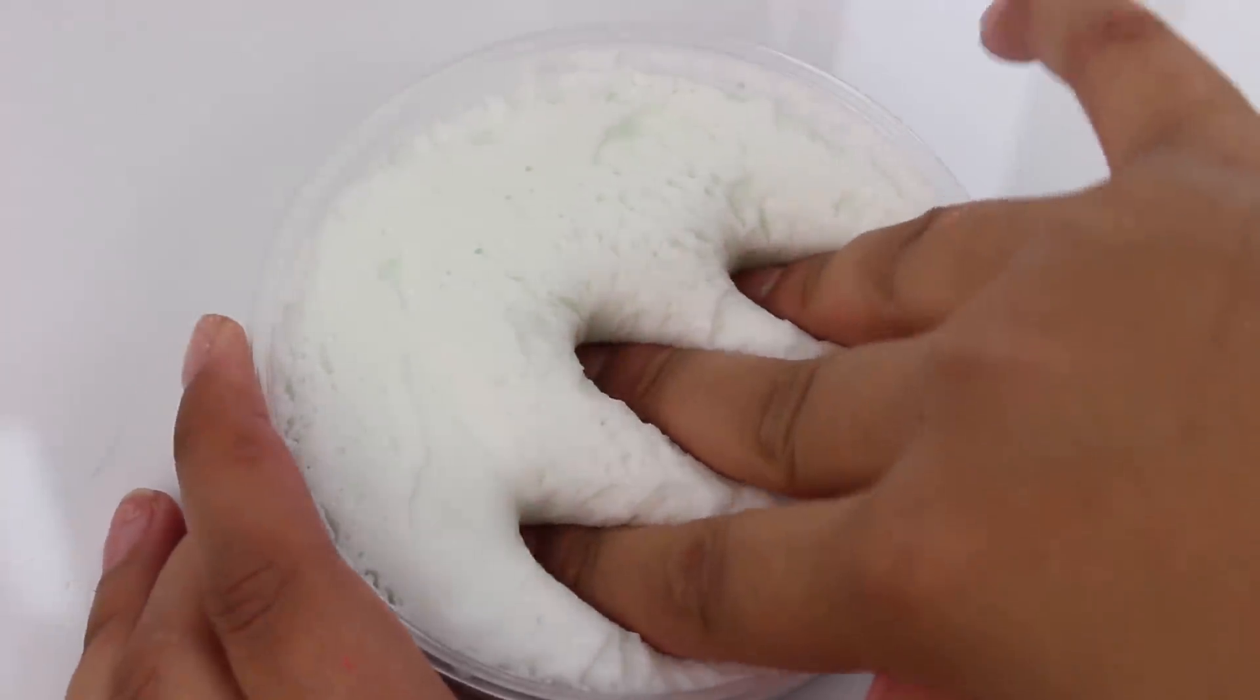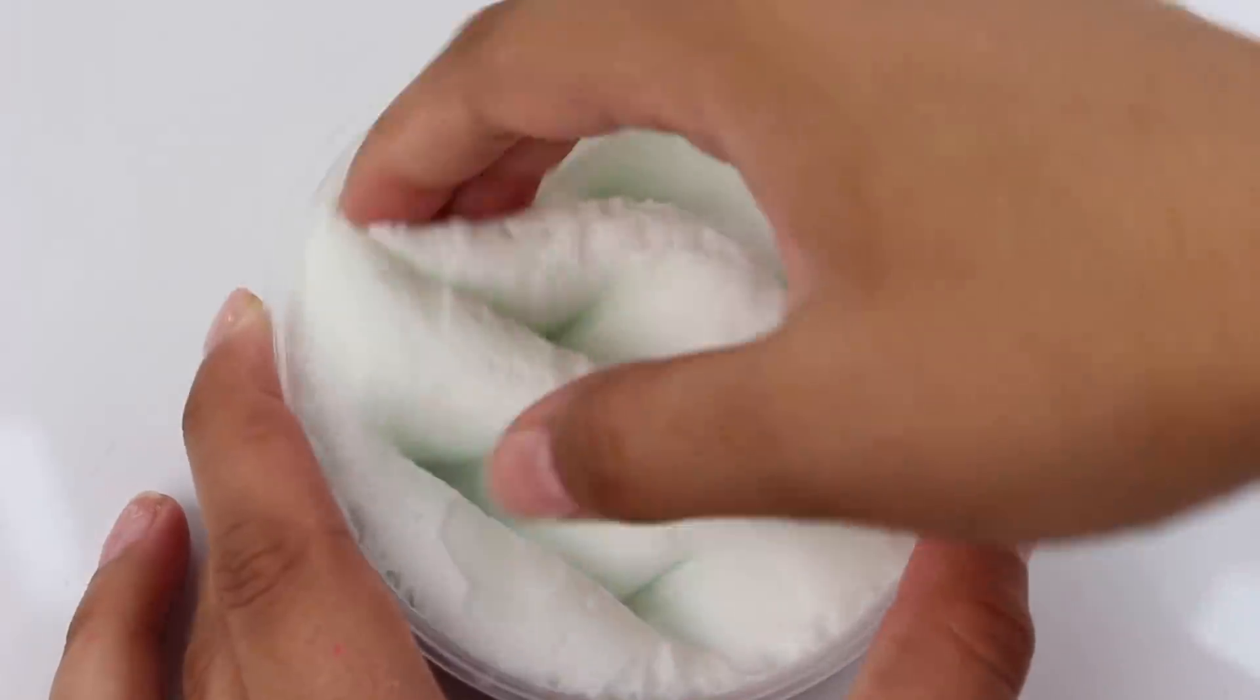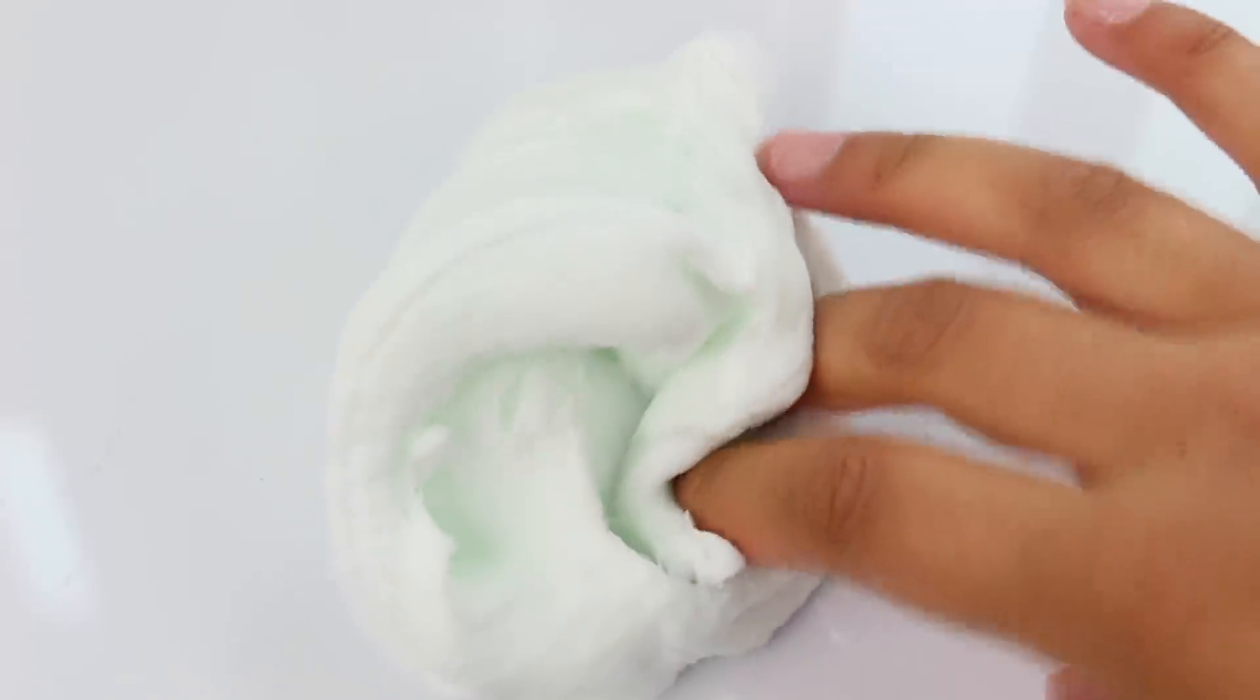Cucumber melon sorbet is being added to the sorbet slime family. If you guys liked last week's sorbet slimes, you definitely need to get your hands on this one because it is cucumber melon scented and it has that popular sorbet slime texture that you guys really loved.